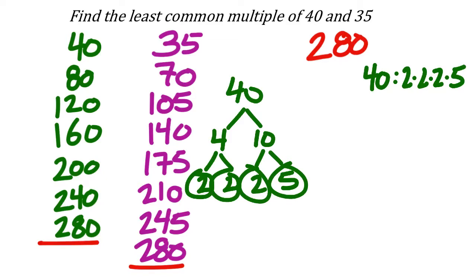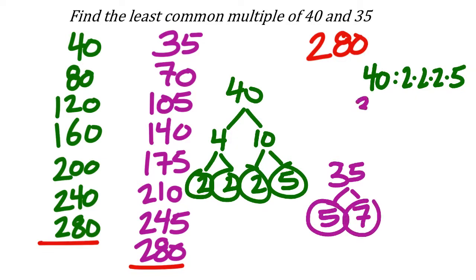Now for 35: 35 splits into 5 and 7, both of which are prime. So the prime factorization of 35 is 7 × 5.